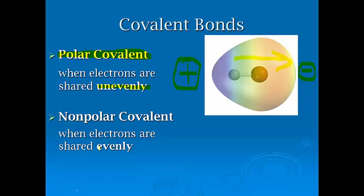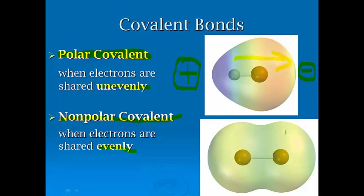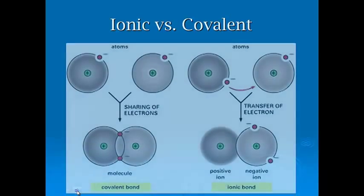When they're shared evenly, those are what we refer to as nonpolar. So if we were to draw a representative electron cloud, it's going to be equal in size because no one's going to win the tug of war.